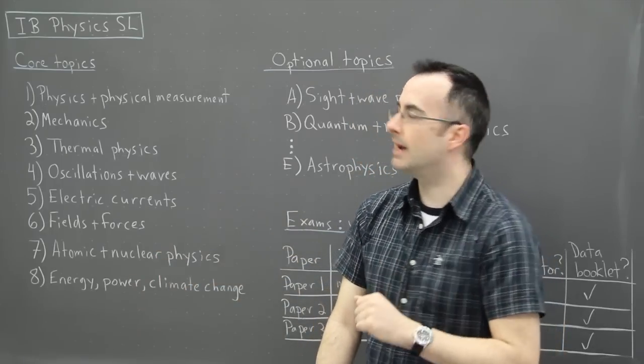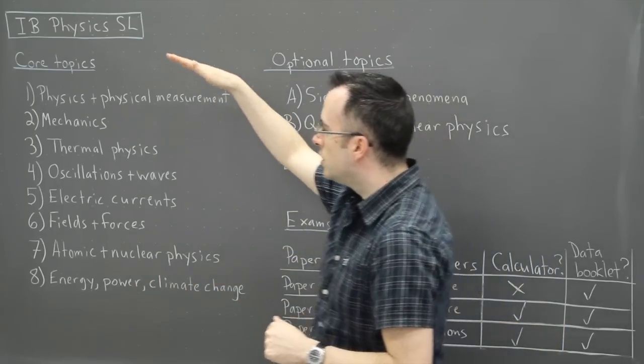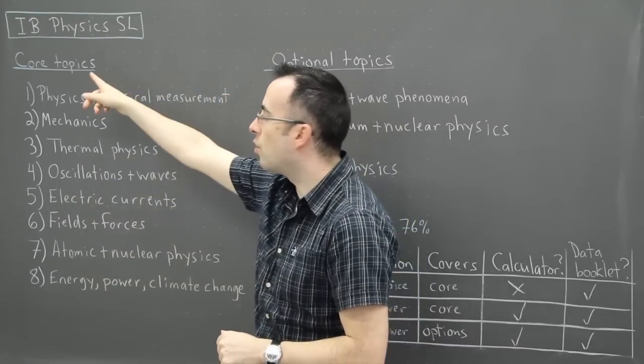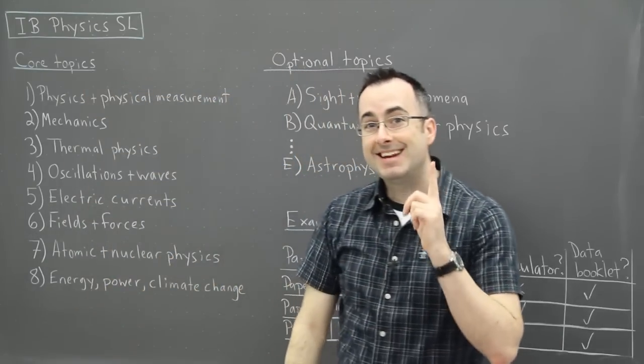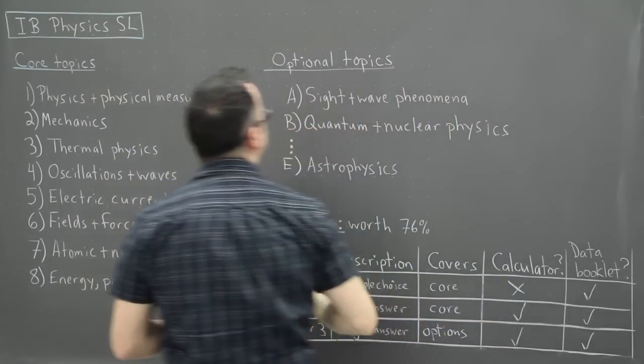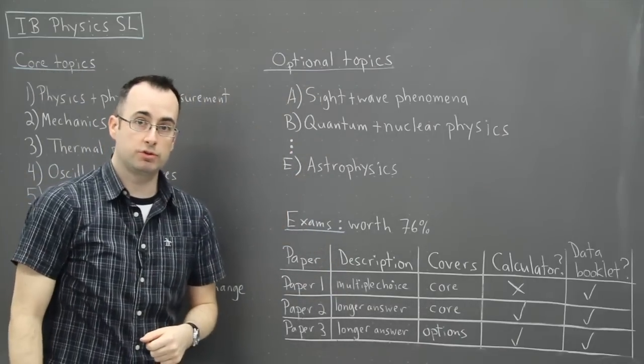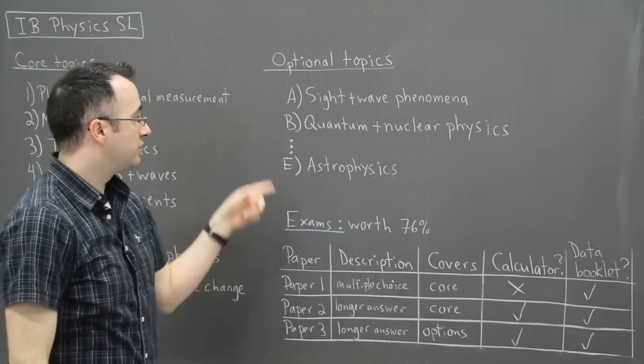So if a student takes the physics SL course, the standard level, you must learn these core topics. But in addition, you also cover some optional topics. Now students are supposed to do two of the optional topics.